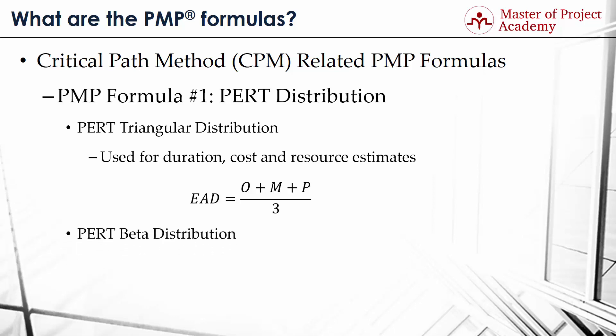PERT Beta Distribution is also one of the most important PMP formulas, and we use it to calculate duration, cost, and resource estimates. Similar to the previous formula, to calculate EAD, you need to determine activities' O, M, and P estimates first. Then you can use the PERT Beta Distribution to estimate the activity duration. Accordingly, the formula for the PERT Beta Distribution is as follows: EAD equals the sum of O plus 4M plus P, all divided by 6.